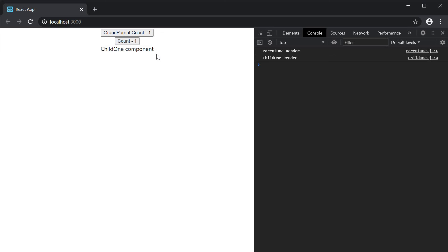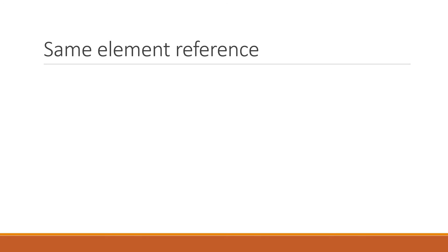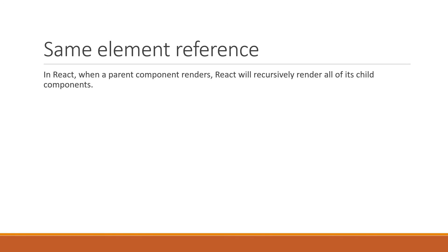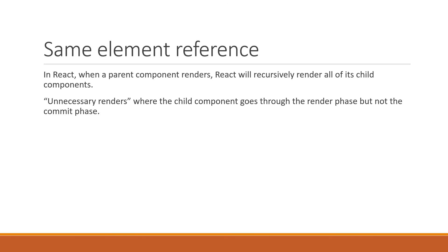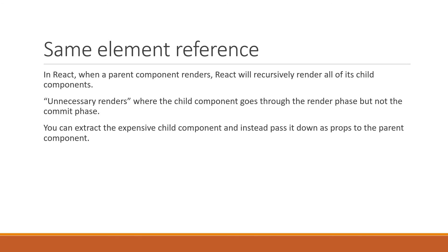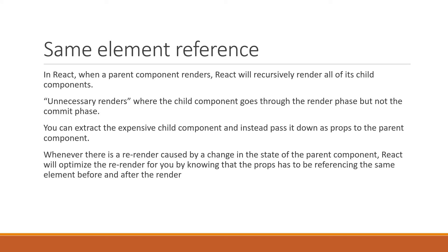I know this was a pretty elaborate explanation, but it is one of the lesser known optimization techniques that I wanted to bring to your attention. In React, when a parent component renders, React will recursively render all of its child components. However, this can lead to unnecessary renders. So if you're experiencing performance issues, you can extract the expensive child component and instead pass it down as props to the parent component. Whenever there is a re-render caused by a change in the state of the parent component, React will automatically optimize the re-render, knowing that the props has to be referencing the same element before and after the render. This will also prevent you from having to wrap your components with React.memo everywhere in your project.